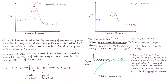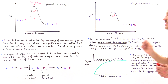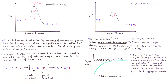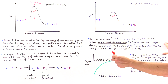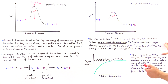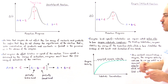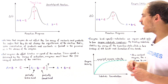Enzymes bind specific substrates on regions called active sites to form the enzyme-substrate complex. By binding substrates to the active sites, enzymes stabilize the energy of the transition state, which in turn stimulates the breakage of old bonds and the formation of new bonds to form the product molecule.